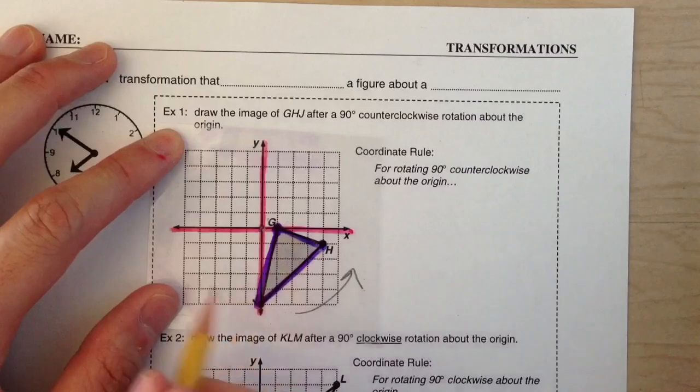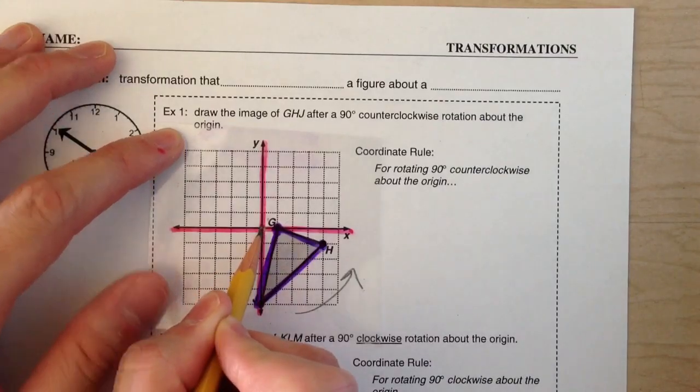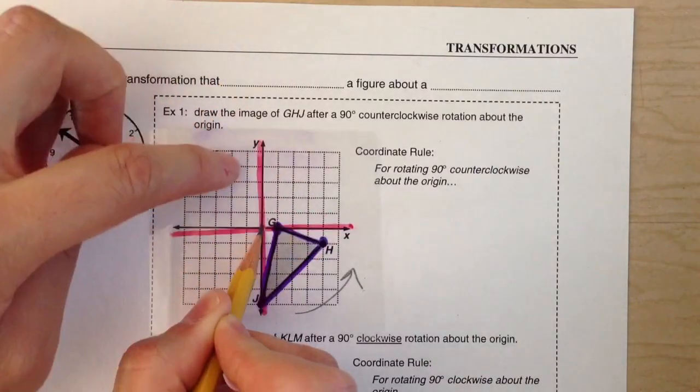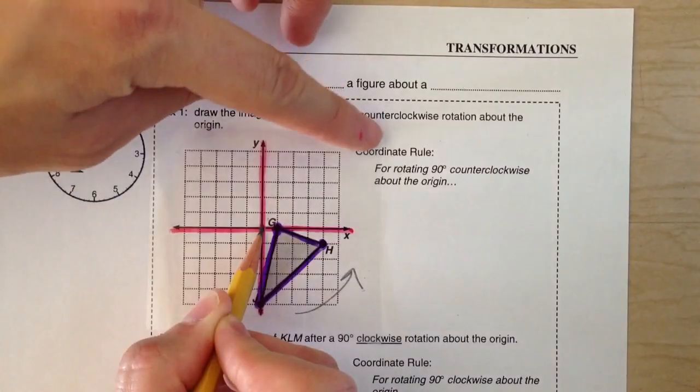And we're rotating 90 degrees. So that means when the x-axis hits the y-axis, we've rotated it enough.